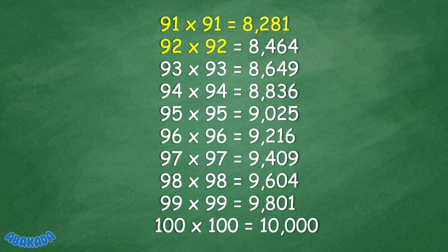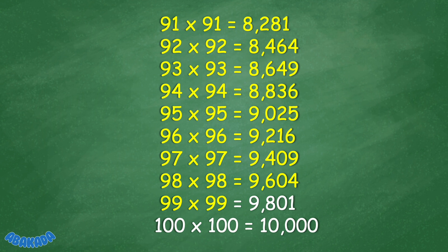92 times 92 equals 8,464. 93 times 93 equals 8,649. 94 times 94 equals 8,836. 95 times 95 equals 9,025. 96 times 96 equals 9,216. 97 times 97 equals 9,409. 98 times 98 equals 9,604. 99 times 99 equals 9,801. 100 times 100 equals 10,000.